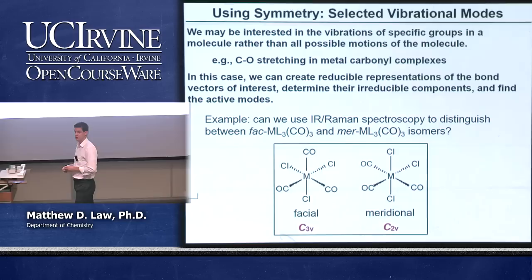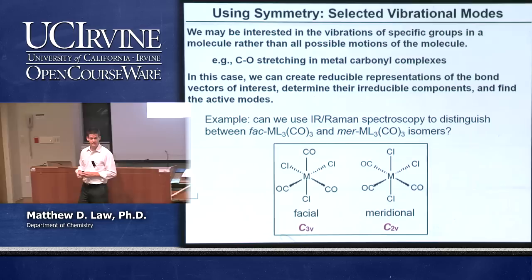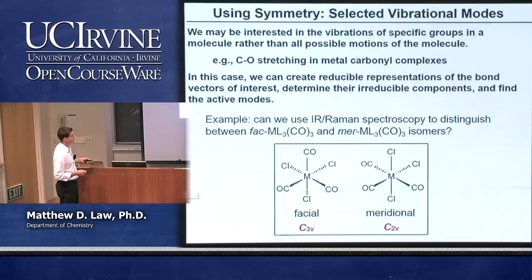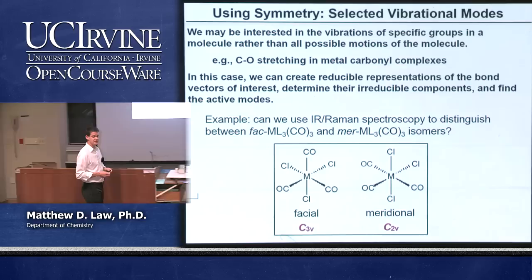This example between two isomers — the FAC isomer and the MER isomer — illustrates how we can make any reducible representation of any set of vectors in the molecules we care about. In this case, we're looking at the three carbonyl stretches in each of these two different molecules. The first step, as always, is to assign the point group of the molecule, which are C3V and C2V in these two particular cases.